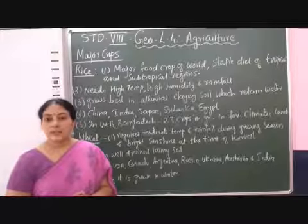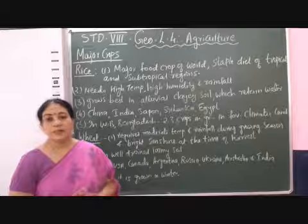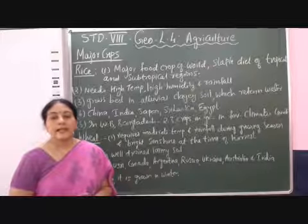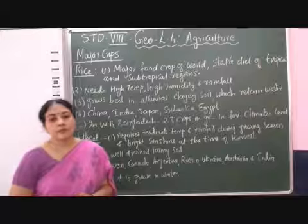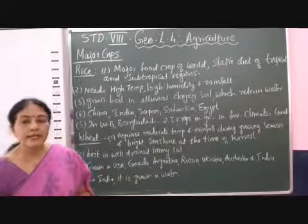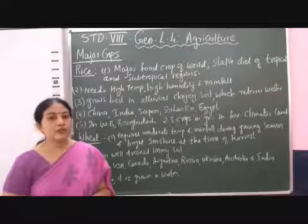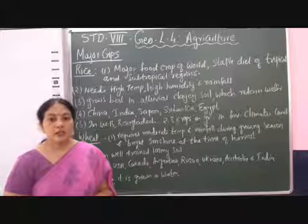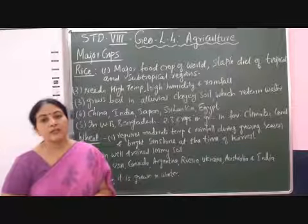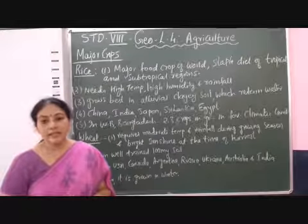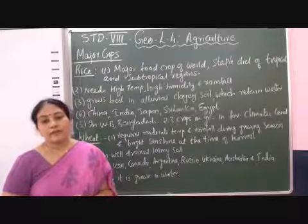First, rice. Rice is the major food crop in the whole world, and it is specially grown and consumed by the people of tropical and subtropical areas. Basically, rice is a Kharif crop which requires a lot of rainfall. That is why in India it is grown during the rainy season.